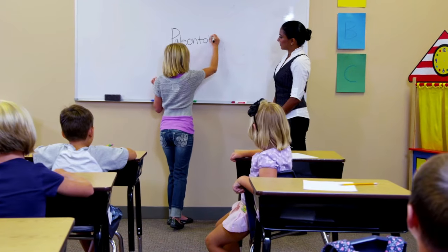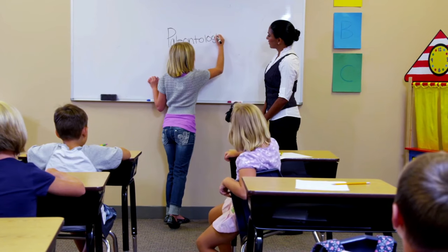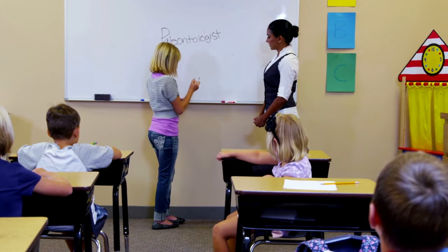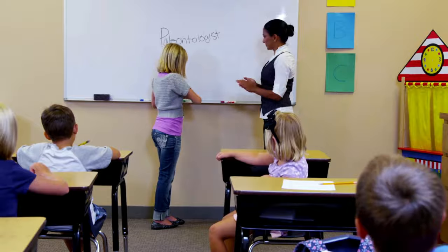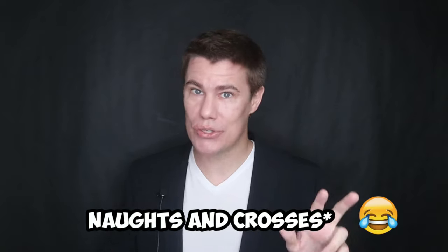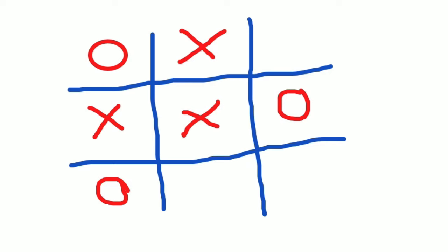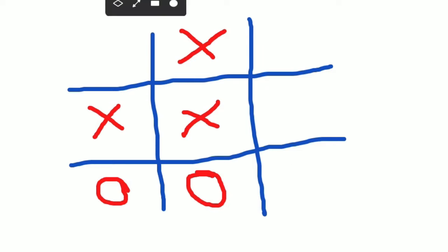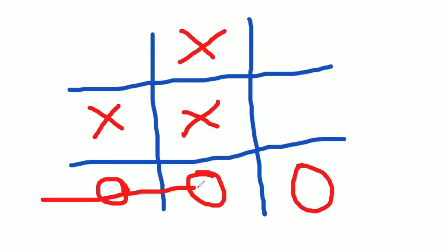Spelling tic-tac-toe. Draw a big tic-tac-toe grid on the board. Make two teams and assign a board marker to each. One person from each team comes to the front of class. Give them a word to spell. The first one to write it out correctly gets to place an X or an O. Each team only gets either three O's or three X's. Once they've placed all three, each round after that they place it in a new spot until someone wins.